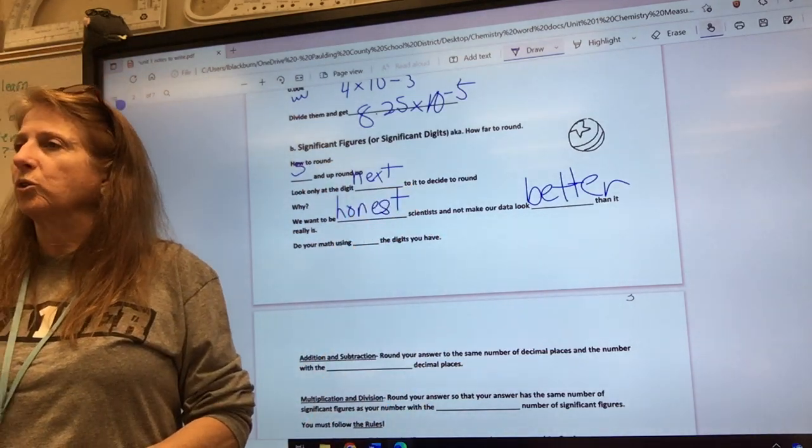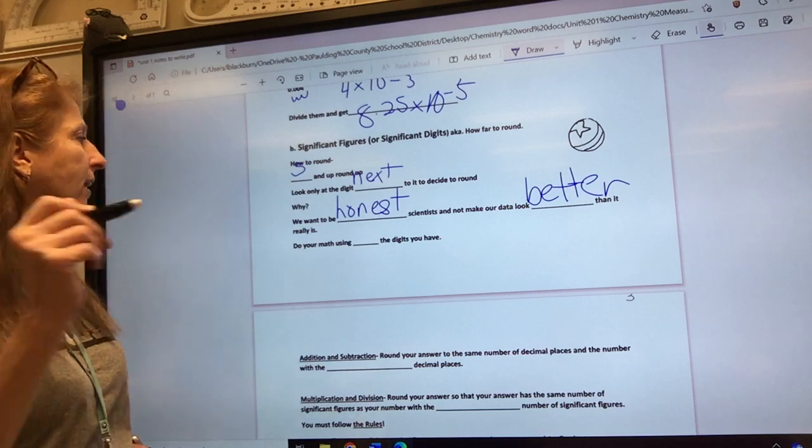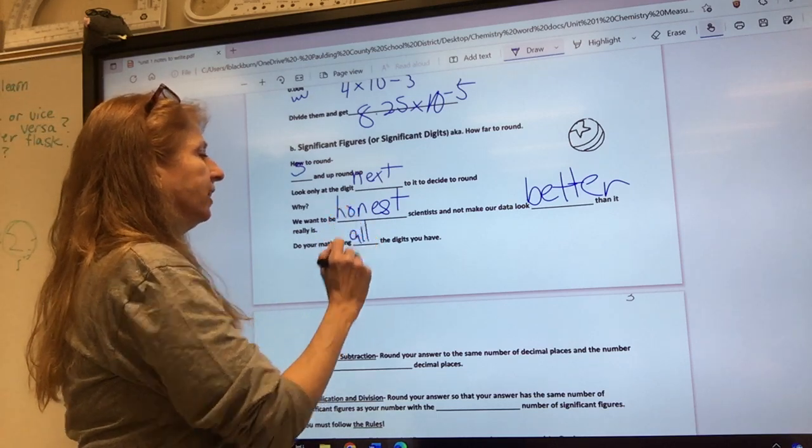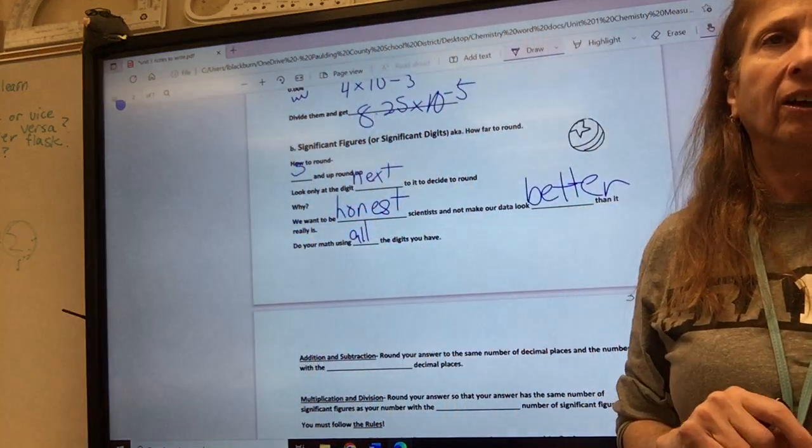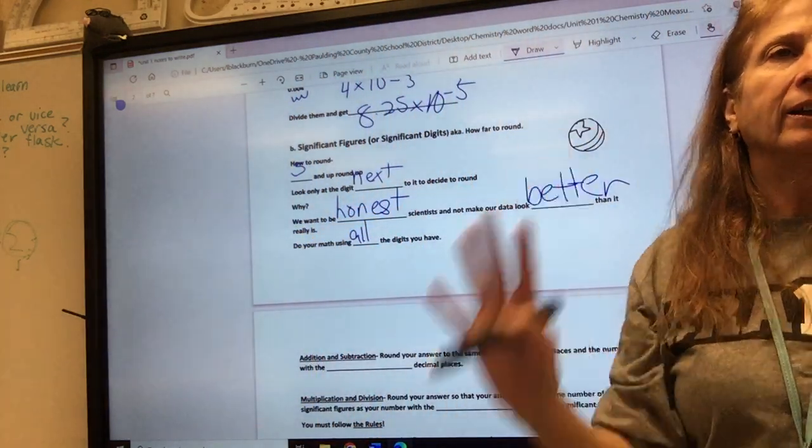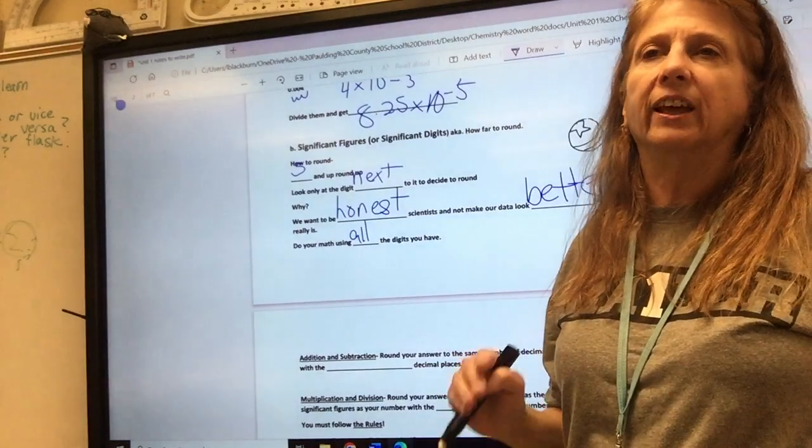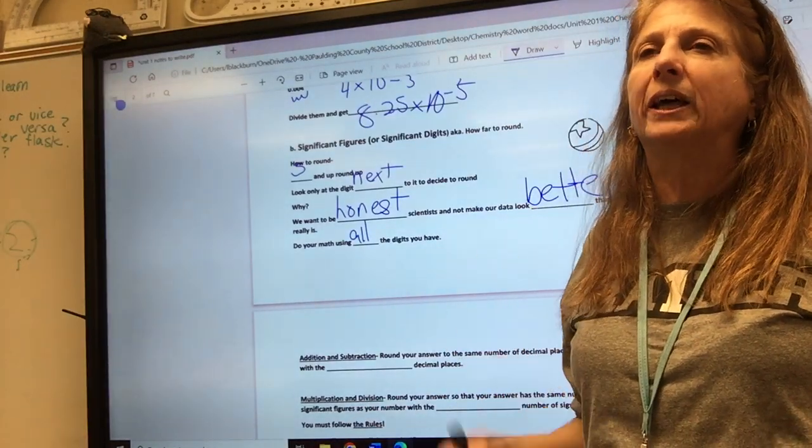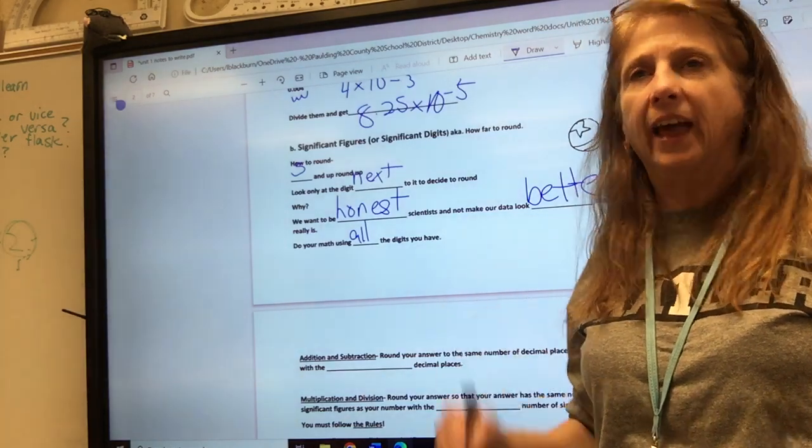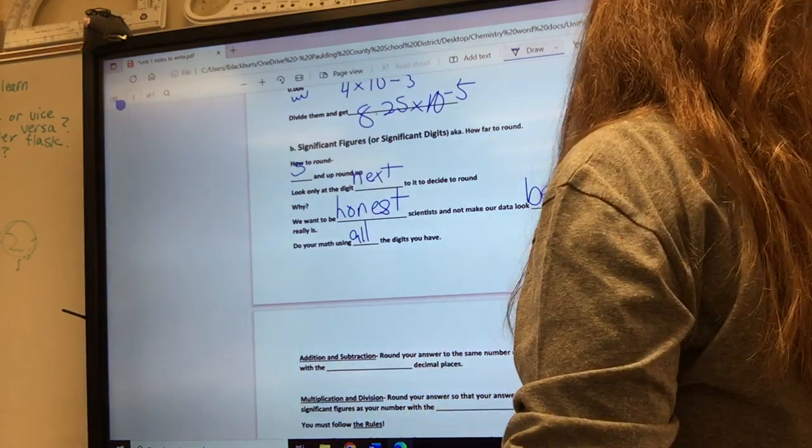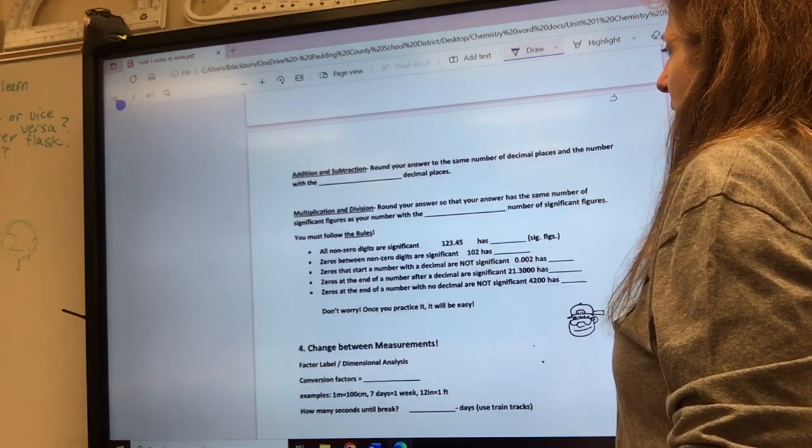There's a list of rules we're going to follow. The first rule is you do your math using all the digits you have. You do no rounding to the very last. Number one, leave all the digits to the end. Do not start rounding in the middle. You will get the wrong answer. Especially on the SAT and the ACT. Do not round to the very end. Rule number one.